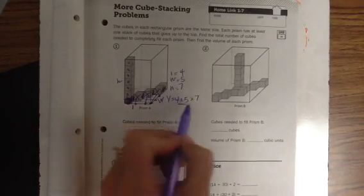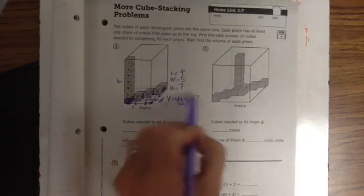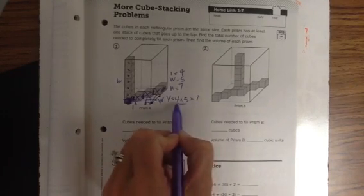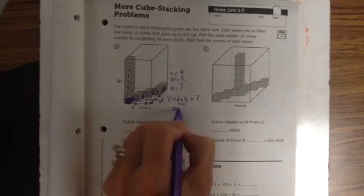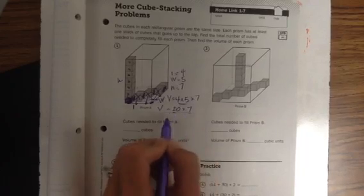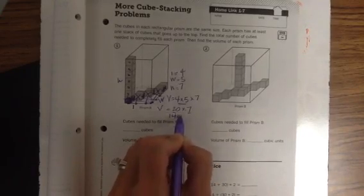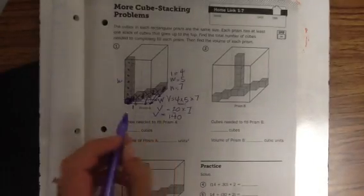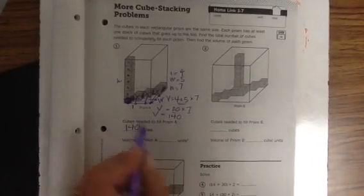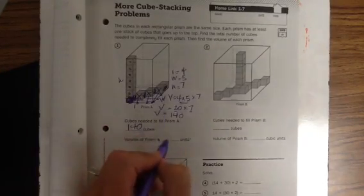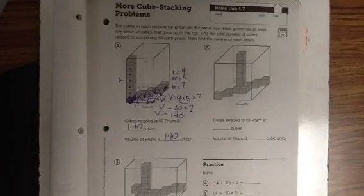I told them the truth is it does not matter which order you multiply these in. So we're going to do whatever's easiest for me. I'm going to do 4 times 5 is 20. 20 times 7, I know I can do 2 times 7 is 14. Got my 0. 140. So that means it took 140 cubes to fill this prism, which also means that the volume is 140 cubic units.